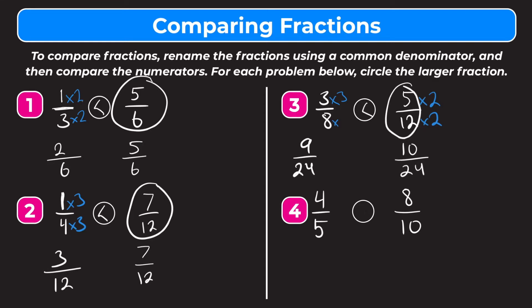Let's try number four. We have four-fifths and eight-tenths. The common denominator here is going to be ten. We multiply the four-fifths numerator and denominator by two, and that gives us eight-tenths. The other side is already over ten, so we can bring that down. If you notice, eight-tenths is equal to eight-tenths, so we write an equal sign here, which means four-fifths is equal to eight-tenths. Since they're equal, we don't have to circle either of them.